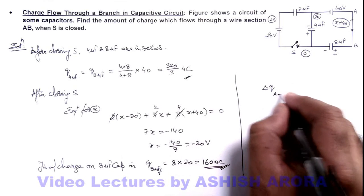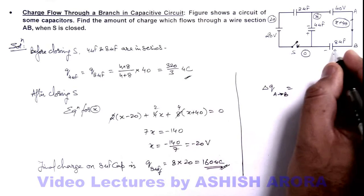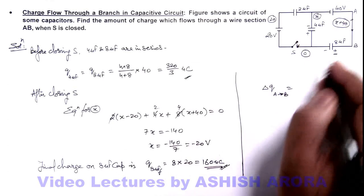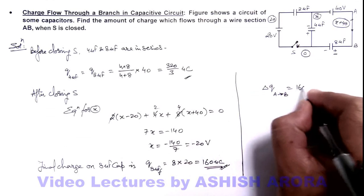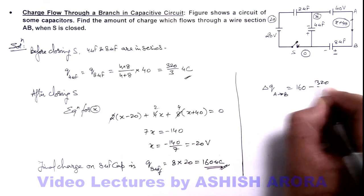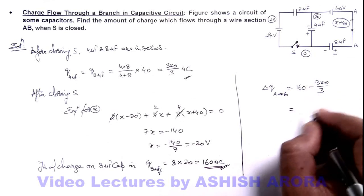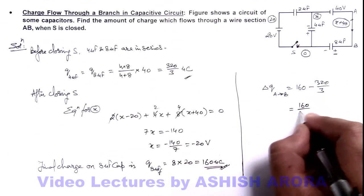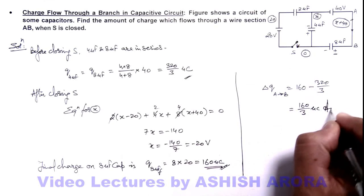Which flows from A to B is the excess charge on the right plate of the capacitor. So this will be 160 minus 320/3, and the value will be 160/3 microcoulombs. That is the answer to this problem.